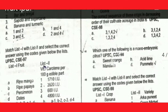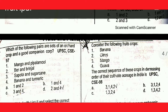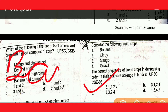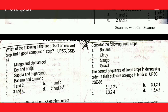Next question: consider the following four crops — banana, citrus, mango, guava. The correct sequence of these crops in the decreasing order of their cultivated acreage in India is 3, 1, 4, 2. Option A is correct.